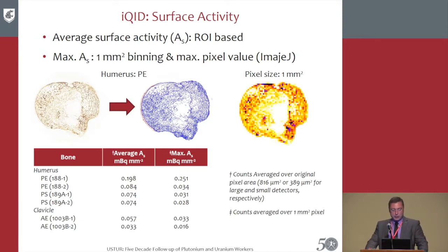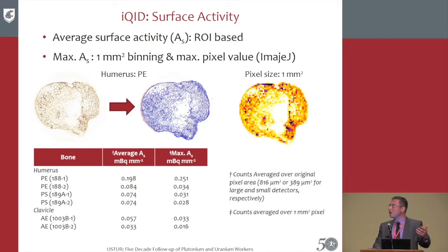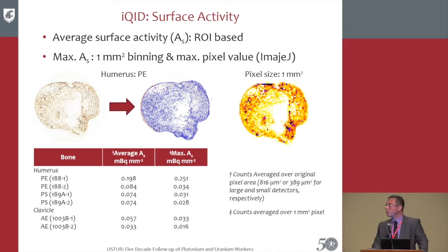Average surface activity was measured based on ROI analysis. On the right side you have the actual iKID image, overlapped with anatomical regions on the actual slide, to calculate average surface activities in units of mBq/mm². Maximum activity was also acquired using a binning method — the whole image was binned down to mm² pixel size, making the maximum easier to identify and calculate.